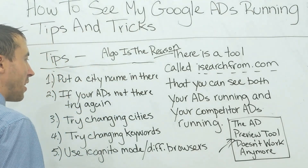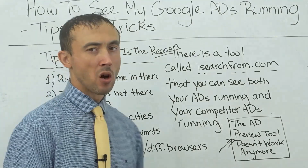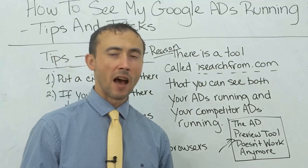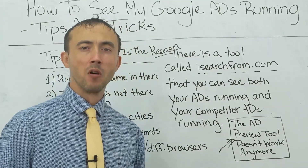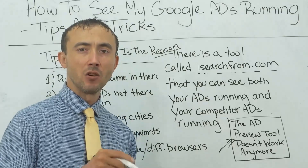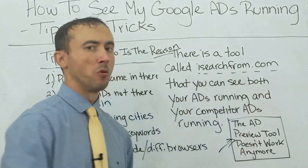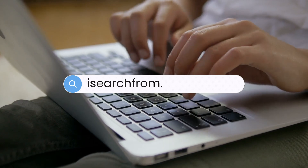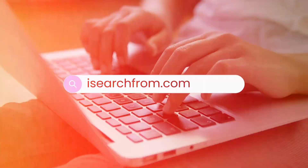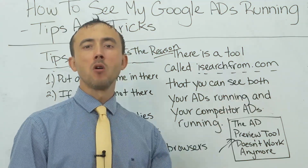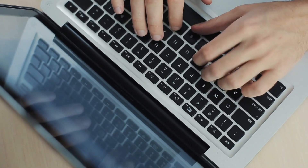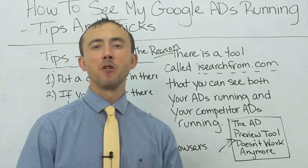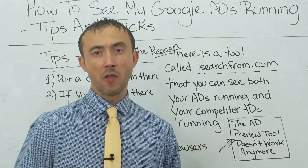So what do you do to fix this? If you use the ad preview tool, you don't see your ad. If you use Google search, you don't see your ad. People in the know have been using a new tool, separate from Google, to actually audit and see your own ads running — and that is the iSearchFrom tool. You can go to isearchfrom.com, type in your keyword, hit enter, and be able to see what Google will look like for that keyword search, and whether your ad is showing or not for that particular keyword.